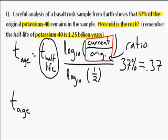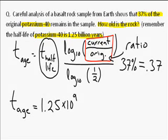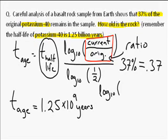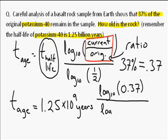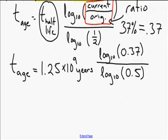T_age equals 1.25, and billion is times 10 to the 9 years, times log base 10 of 0.37, divided by log base 10 of one-half. And I'm going to just write it in decimal form. You don't have to. I just find it a little bit easier to keep track of what's going on. Scroll down a little here, get some room.